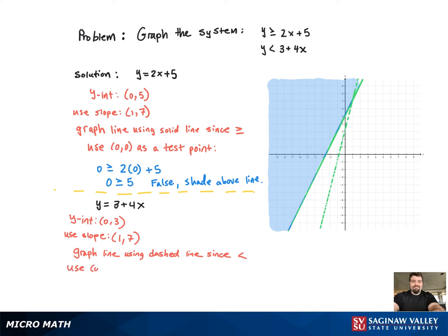Now again, we have to shade a region. Using a test point, we pick (0, 0) again. And when we plug it in, we want to see if it's a true or false statement.